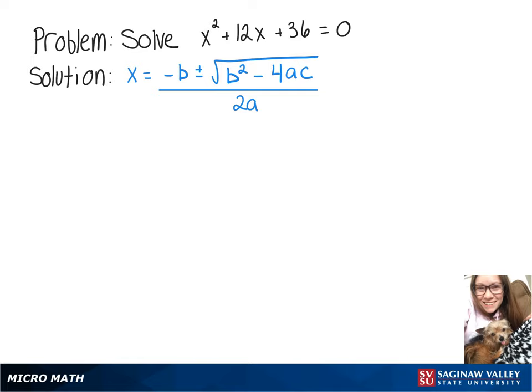We're going to solve x squared plus 12x plus 36 equals 0 using our quadratic formula. So a will be 1, b will be 12, and c will be 36.